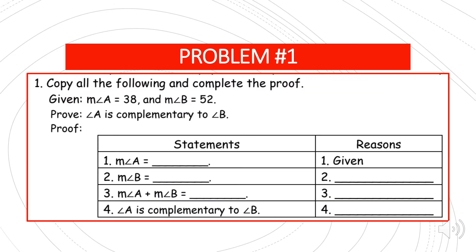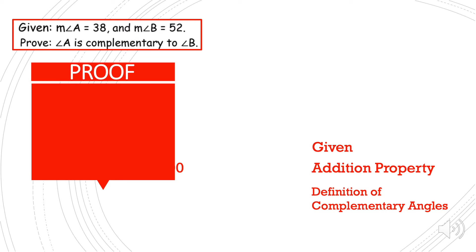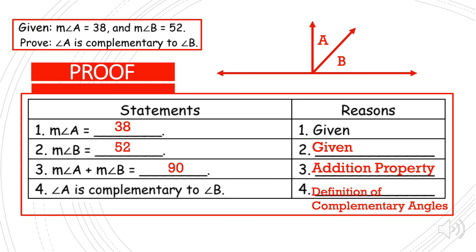Problem number one. We were given that measure of angle A is equal to 38 degrees and measure of angle B is equal to 52 degrees. Let's prove that angle A is complementary to angle B. So here is the proof. Statement one: measure of angle A is equal to 38, reason: given. Statement two: measure of angle B is 52, reason: given. Statement three: measure of angle A plus measure of angle B is equal to 90, reason: addition property. Finally, statement number four: angle A is complementary to angle B by the definition of complementary angles.